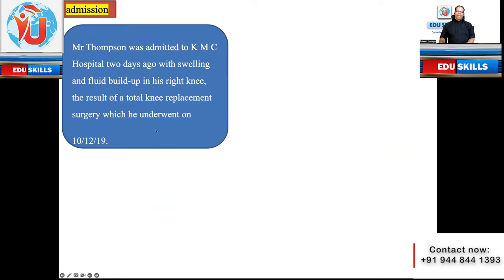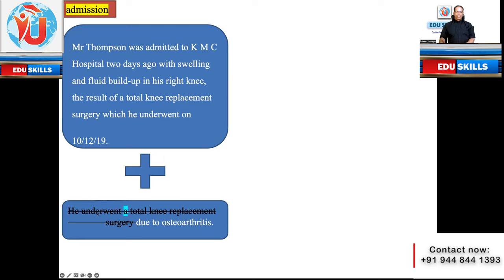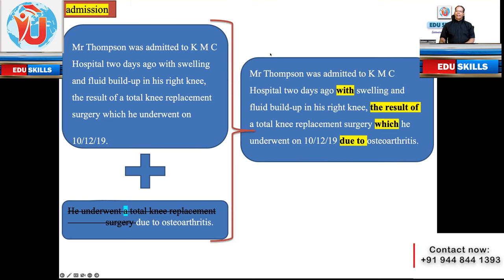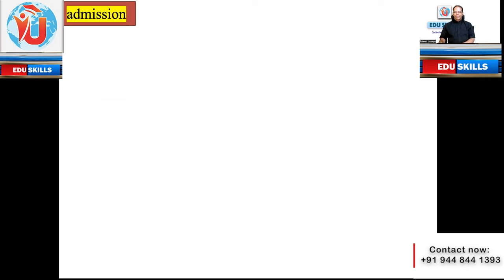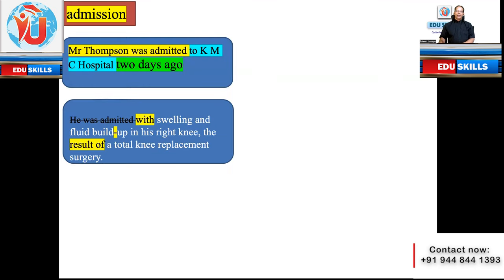Now we'll be adding one more thing: 'he underwent a total knee replacement surgery due to osteoarthritis.' Adding this to the sentence gives us: 'Mr. Thompson was admitted to KMC Hospital two days ago with swelling and fluid build-up in his right knee, the result of a total knee replacement surgery which he underwent on 10/12/19 due to osteoarthritis.' This is a sentence which can get you an A+ grade.